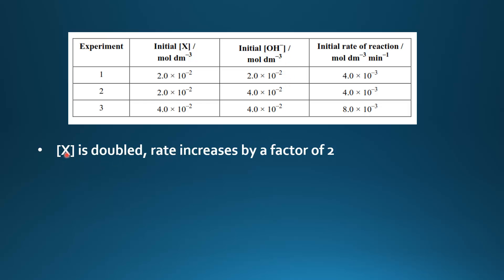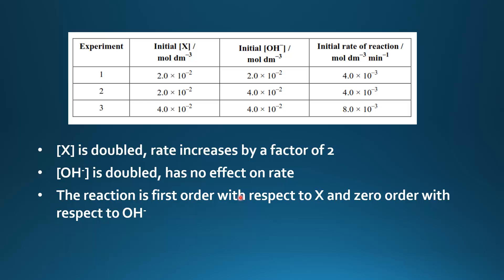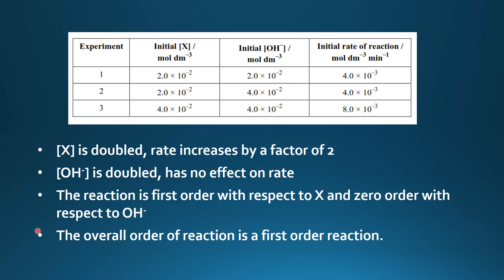When the concentration of X is doubled the rate increases by a factor of two. When the concentration of OH⁻ is doubled it has no effect on the rate. So the reaction is first order with respect to X and zero order with respect to OH⁻. If changing the concentration has no effect on the rate, it's zero order. The overall order of reaction is first order, and when you write the rate expression you don't include the zero order reactant — so it becomes rate equals K times the concentration of X.